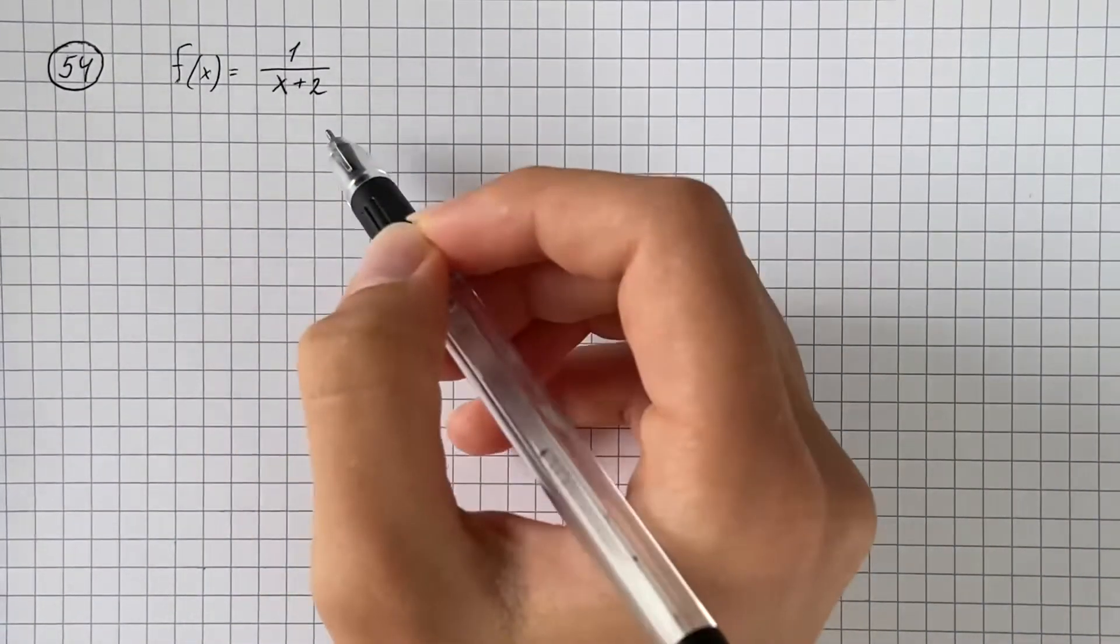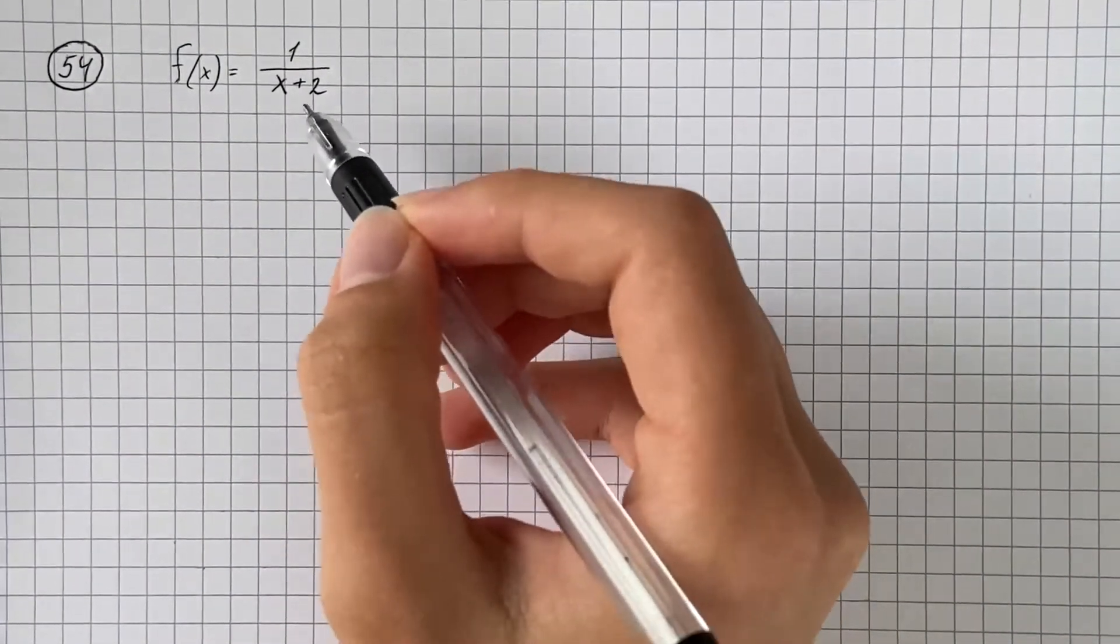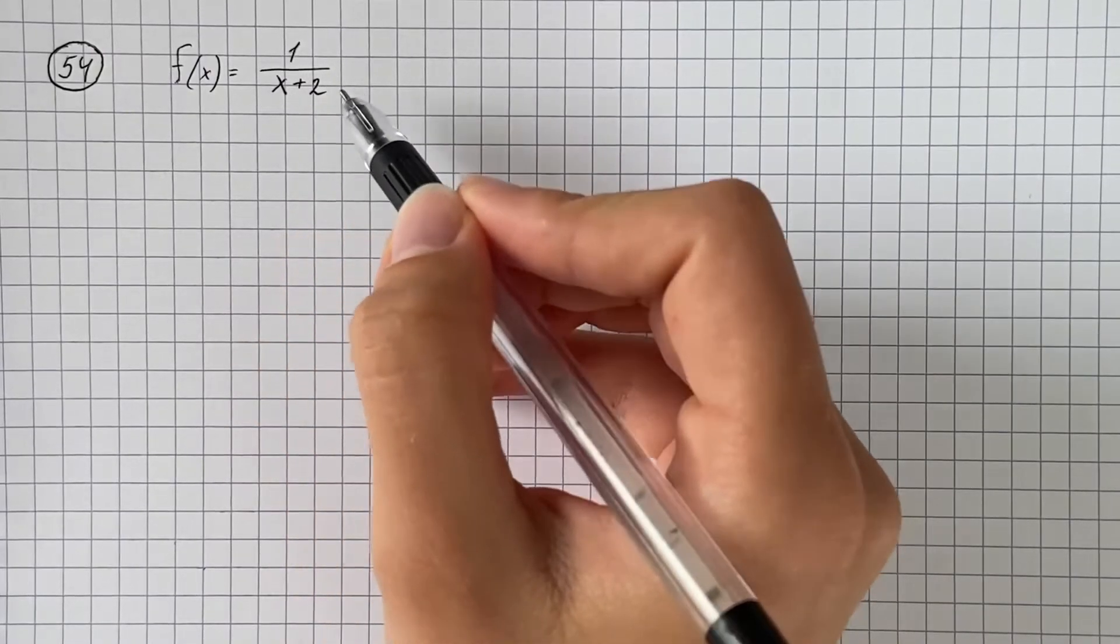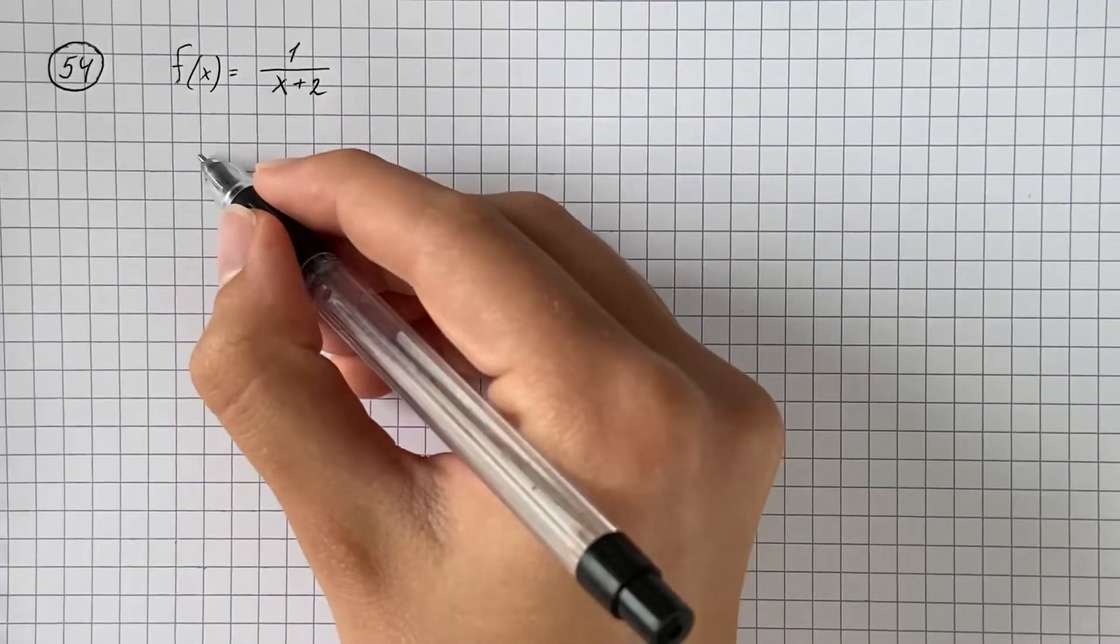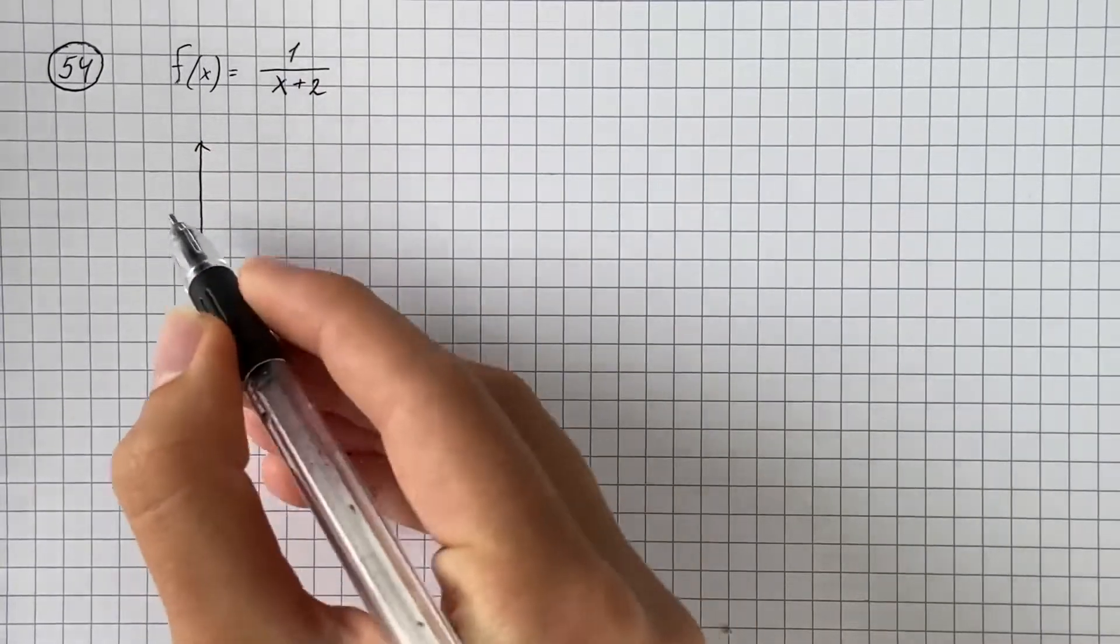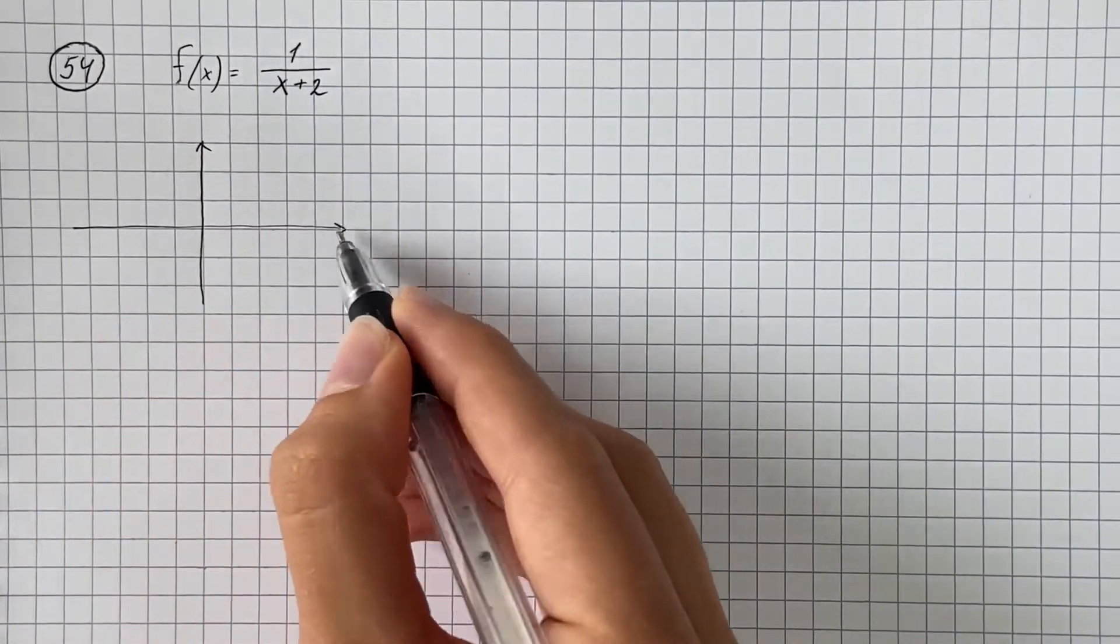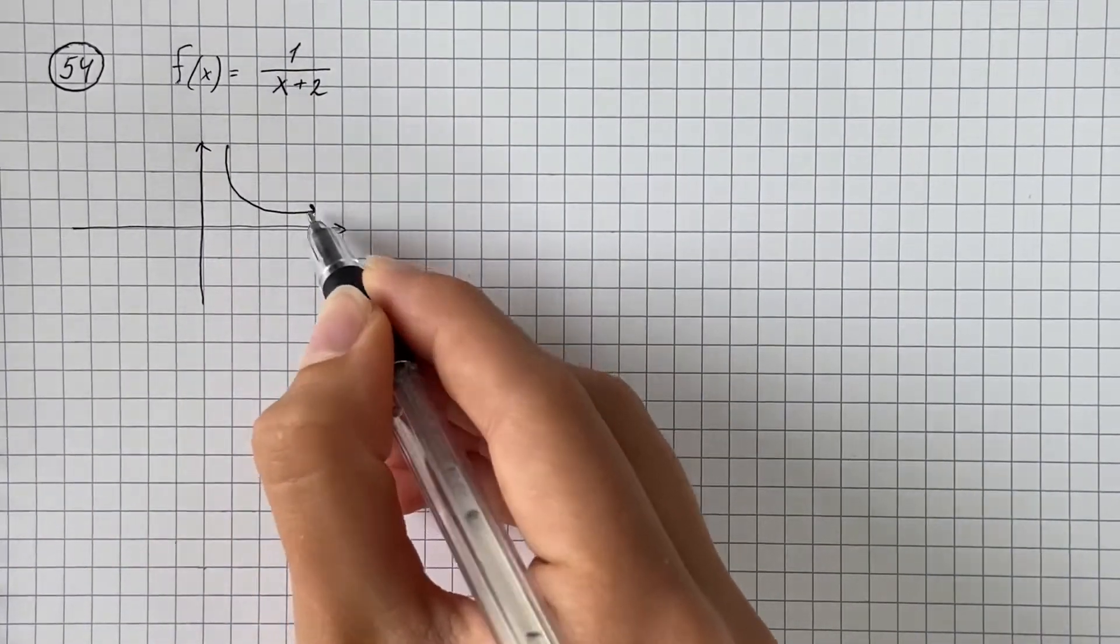We should sketch the graph of the given function, and here we need to remember basic graphs and graph shifts. So we should recall the function of 1 over x, which graph looks like this.